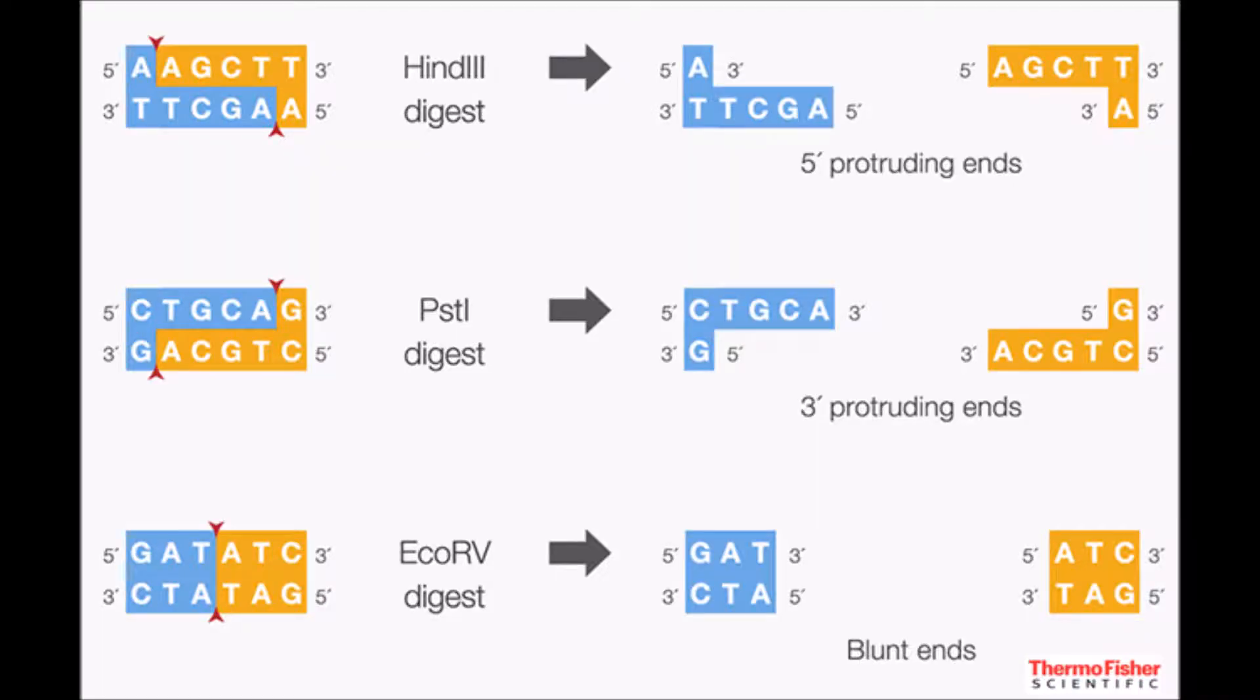Later on, Hamilton Smith and Kent Wilcox isolated and characterized the first restriction enzyme from Haemophilus influenzae and confirmed Arber's hypothesis. Today, restriction enzymes are the ultimate tool for DNA cutting and recombinant technologies.